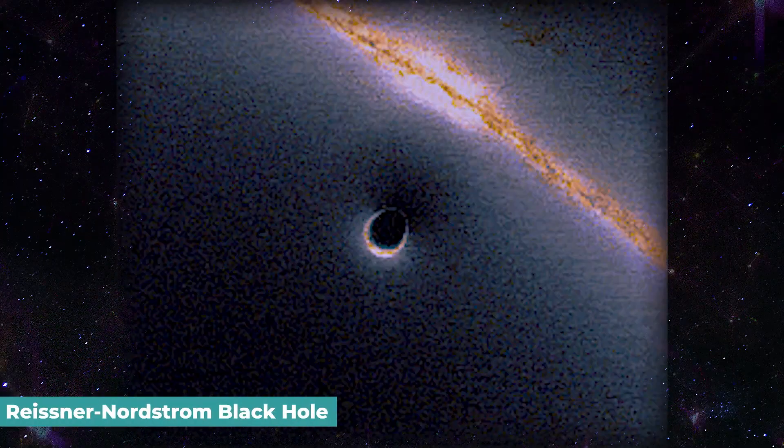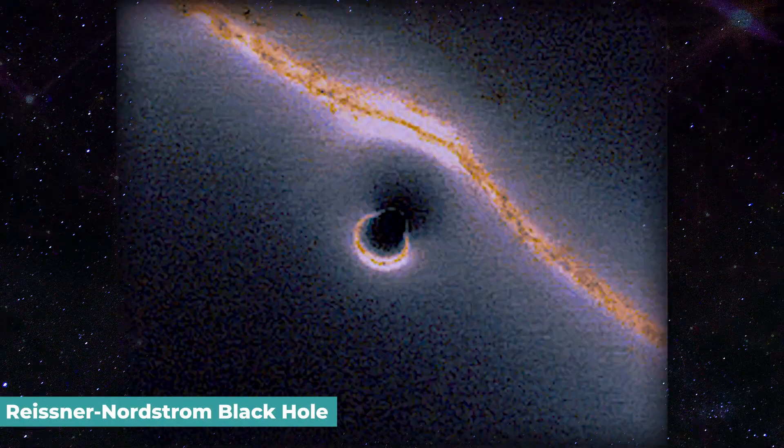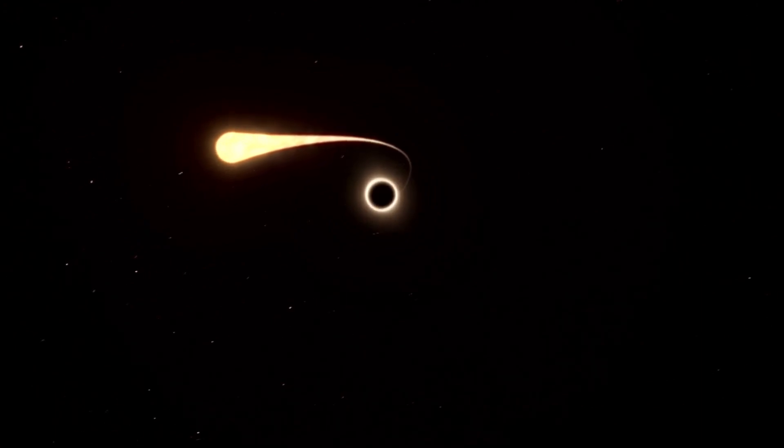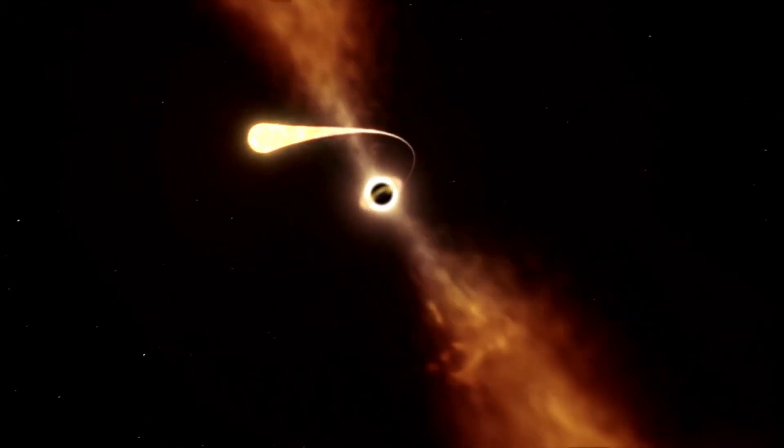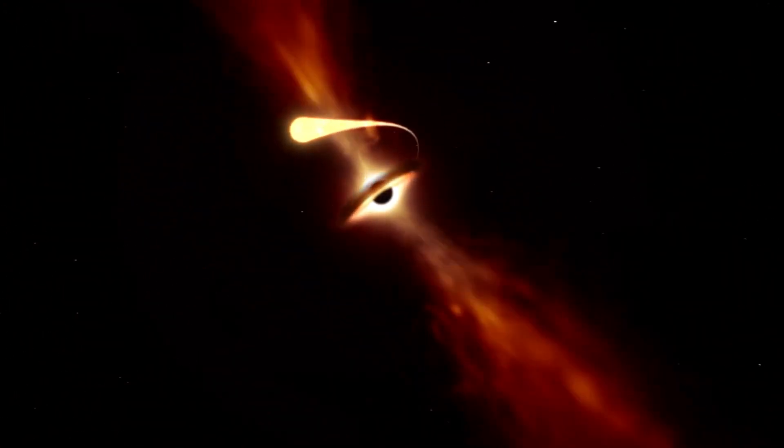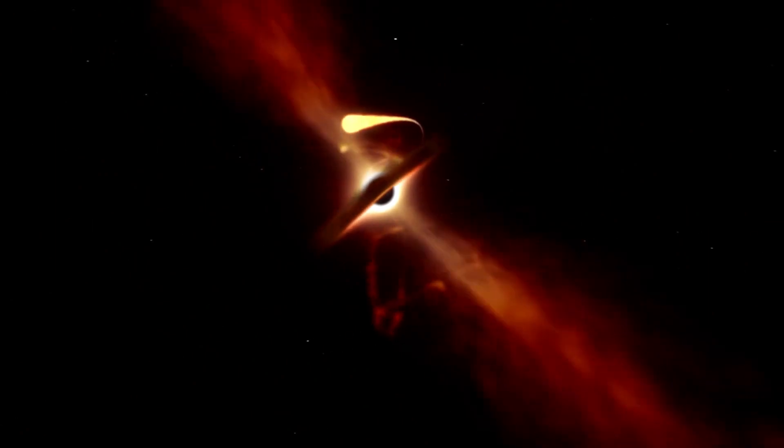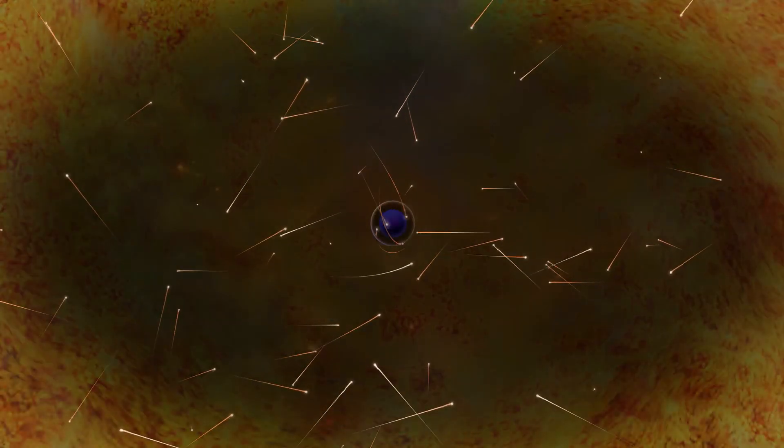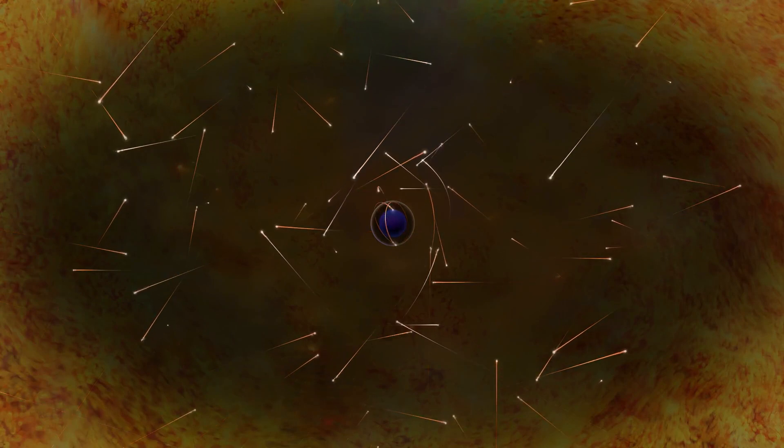A black hole known as a Reissner Nordstrom black hole is particularly significant in this context. They revolve and have an electrical charge. Some scientists believe a whole planet may dwell inside a black hole without being consumed. This is because black holes of this magnitude possess a second limit beyond the event horizon, a so-called inner Cauchy horizon, a region inside which things become relatively stable and smooth. Radiation and tidal forces are rather modest here.